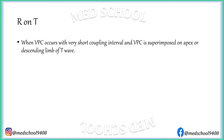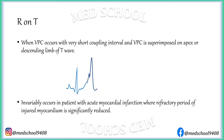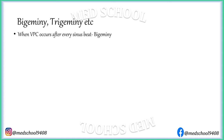When VPC occurs with a very short coupling interval and the VPC is superimposed on the apex or descending limb of the preceding T-Wave, then it is called the R on T phenomenon. This invariably occurs in patients with acute myocardial infarction, where the refractory period of the injured myocardium is significantly reduced. These patients are prone to develop ventricular fibrillation.